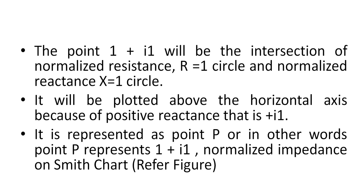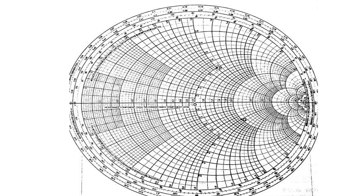The point 1 plus j1 is the intersection of normalized resistance R equals 1 circle and normalized reactance X equals 1 circle. It is plotted above the horizontal axis because of positive reactance, that is plus j1. It is represented as point P — here is point P, that is the intersection of the 1R circle and the 1X circle.